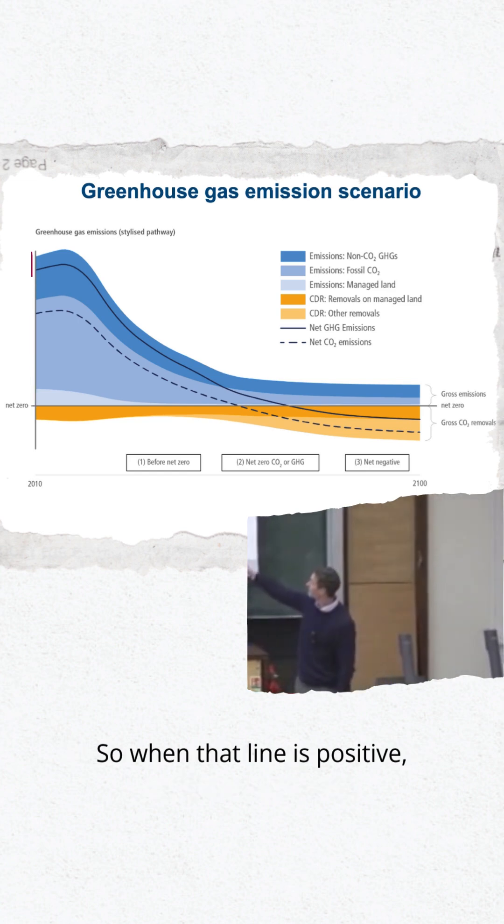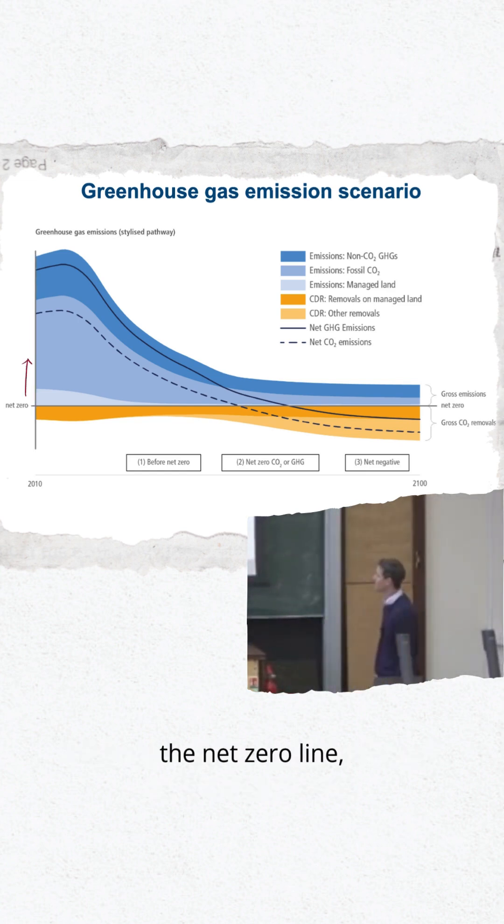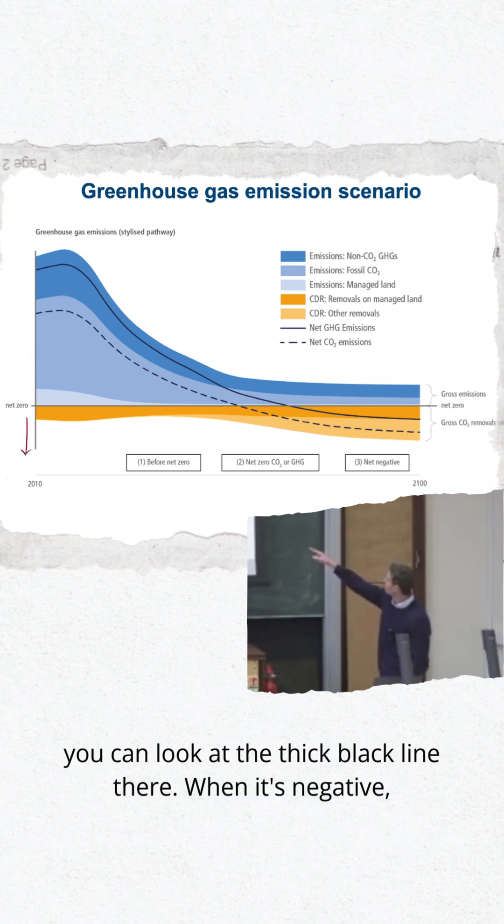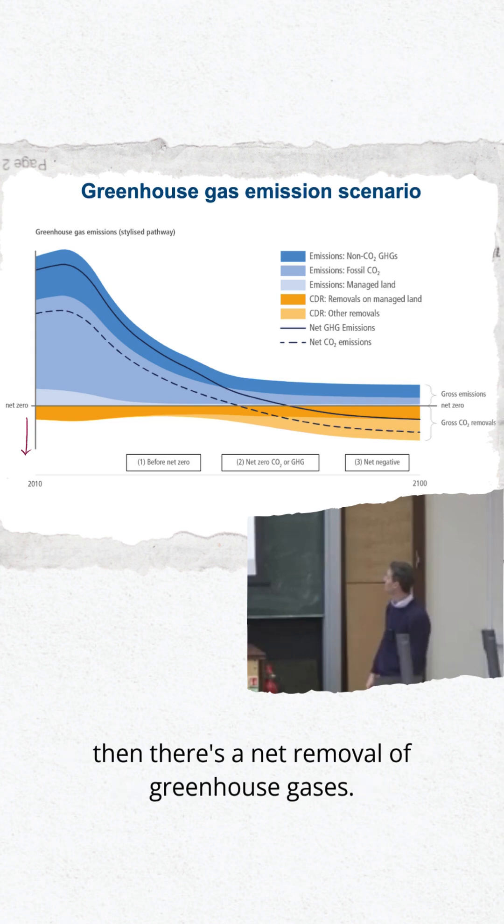When that line is positive, when you're above the horizontal line, the net zero line, there's a net emission to the atmosphere. When the line is negative, you can look at the thick black line there, then there's a net removal of greenhouse gases.